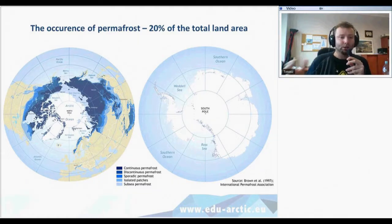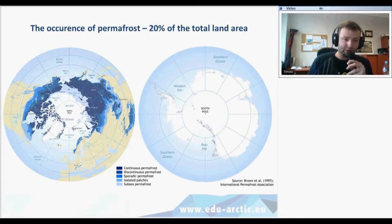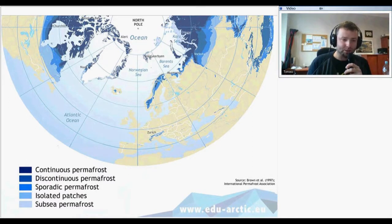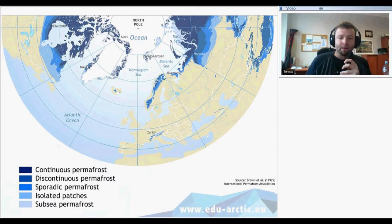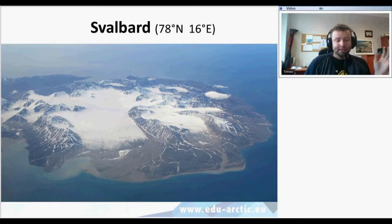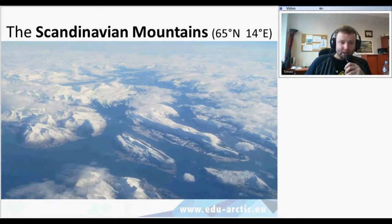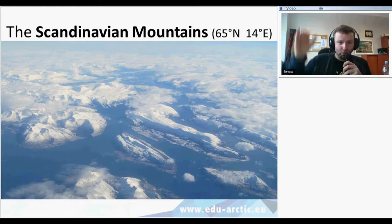Subsea permafrost is also from a previous era, when temperatures were much lower — air temperatures influenced the temperatures of the ground and this ground stayed frozen since that time. Continuous permafrost is in higher latitudes: at Svalbard archipelago, 78 degrees north, there is continuous permafrost. In Scandinavian mountains at 65 degrees north there is also permafrost, which is continuous in higher parts of the mountains and discontinuous in lower parts.